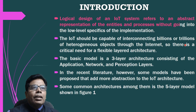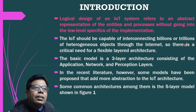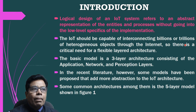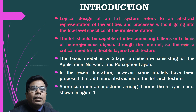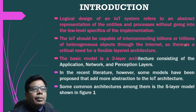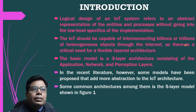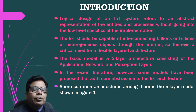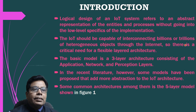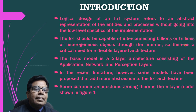Logical design of an IoT system refers to an abstract representation of the entities and processes without going into the low-level specifics of the implementation. IoT should be capable of interconnecting billions or trillions of heterogeneous objects through the internet, so there is a critical need for a flexible layered architecture. The basic model is a three-layer architecture consisting of application, network, and perception layer. However, in recent literature, some models have been proposed that add more abstraction to the IoT architecture. One common architecture is the five-layer model shown in figure one.